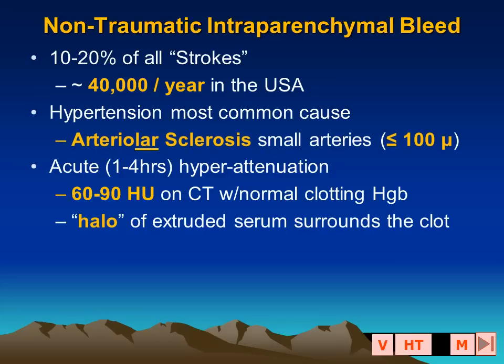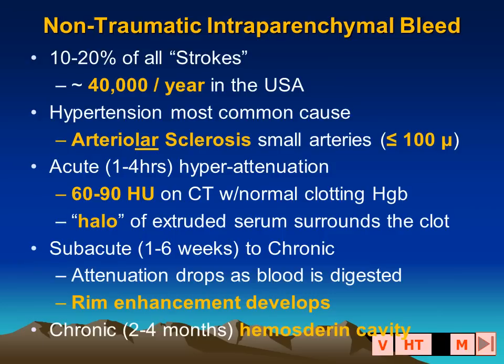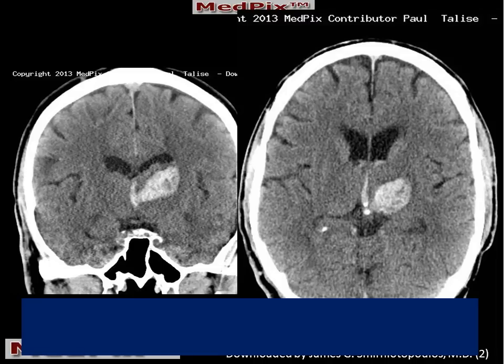The most common cause is hypertension; amyloid angiopathy is less frequent. An acute CT scan demonstrates a hyperattenuating lesion. Subacutely, we can have degradation of the blood products, changing their attenuation and signal intensity on various MR pulse sequences, and there may be development of rim enhancement after a week or two surrounding the hematoma. A chronic hematoma becomes a slit-like cavity with hemosiderin deposited in the rim, easily identified on several pulse sequences on MR.